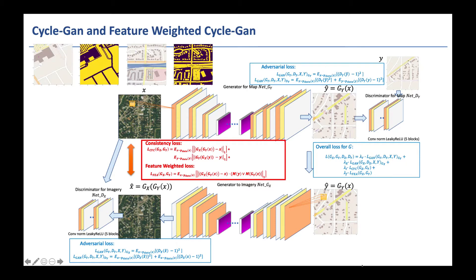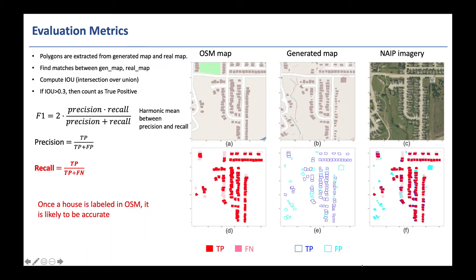We further added a feature-weighted loss on those pixels belonging to houses and roads. The evaluation metric we used is a binary classification metric, the F1 score.